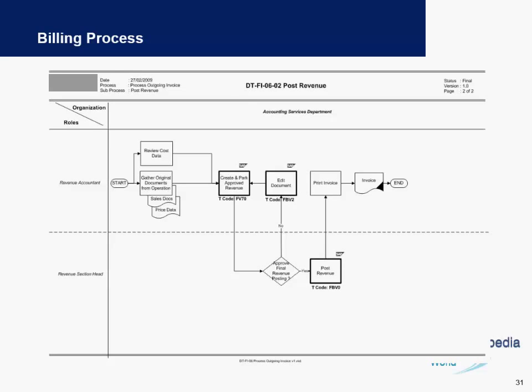In SAP, they will either post or park an invoice, and they also have the authority to edit an invoice before it is finally posted. Once this is done, they can print the invoice and the process ends for them. The revenue section head will be responsible for approving any financial accounting postings, and thus the revenue is posted in the system.